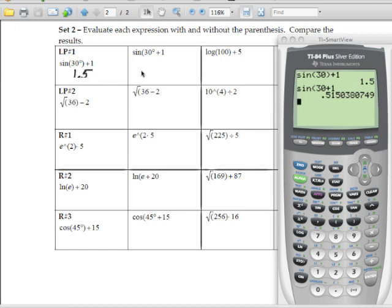And then we had 0.5150380749 for that second one. So go ahead and finish lesson practice number one and lesson practice number two, and just be sure to type in the expression exactly the way it appears with the parentheses and without the parentheses and compare your answers.